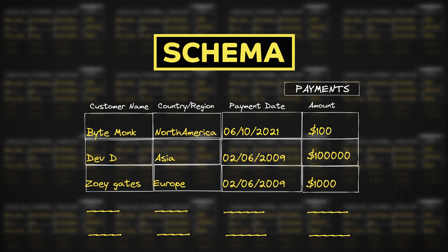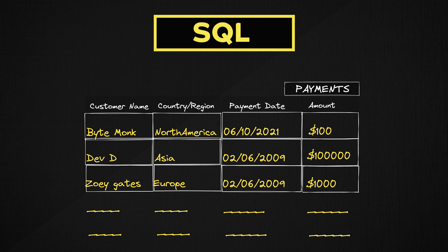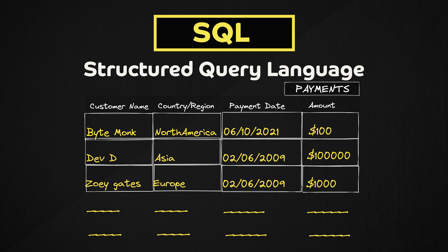In contrast, non-relational databases don't impose tabular structure or schema on the data they store. Most relational databases support SQL, which stands for Structured Query Language, and is a very powerful database programming language. Since almost all relational databases support SQL, the terms relational database and SQL database are often used interchangeably.